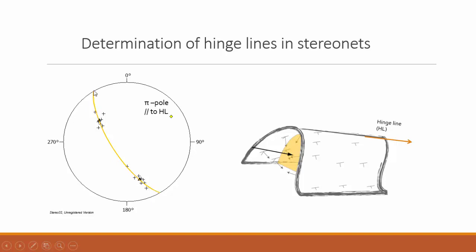Fitting our data onto a great circle — we have these two clusters and we fit a great circle that best represents the two fold limbs, producing another surface. This surface is what we call the pi circle. The pi circle has a normal to it, which we can easily construct using the stereo net. You rotate on your tracing paper this great circle to the north-south orientation and from its center count 90 degrees into the opposite direction of the dip direction to find the pi pole — the normal pole to the pi circle.